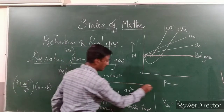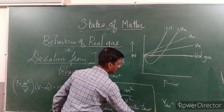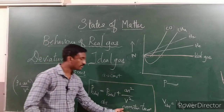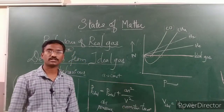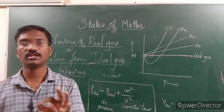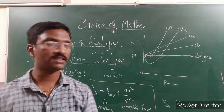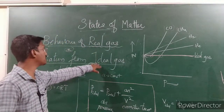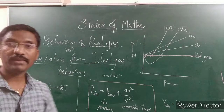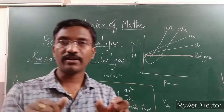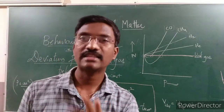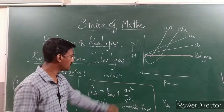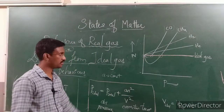By adding the correction term an²/V² to the pressure of real gases, we can convert or equate the real gas pressure to the ideal gas pressure. This means the deviated ideal gas can be treated as an ideal gas by adding appropriate correction terms.